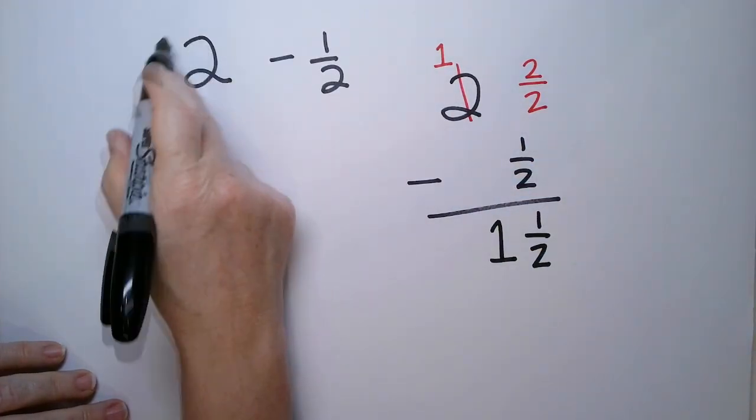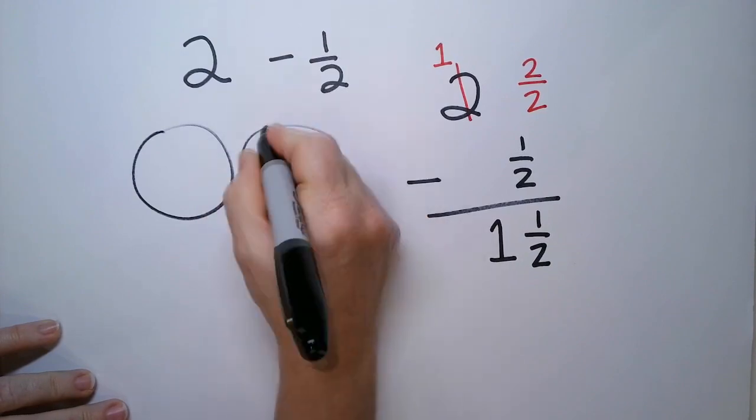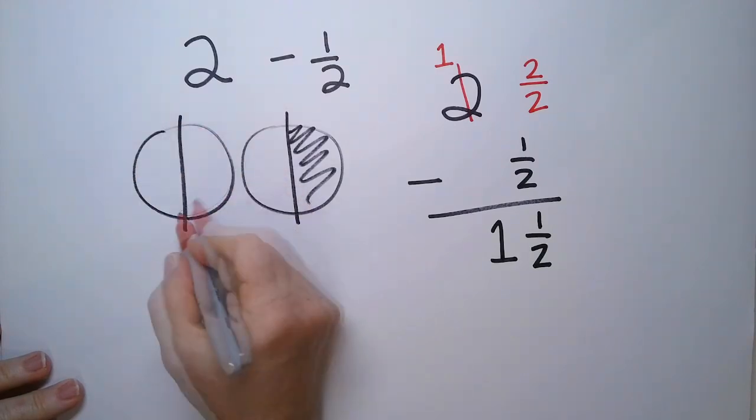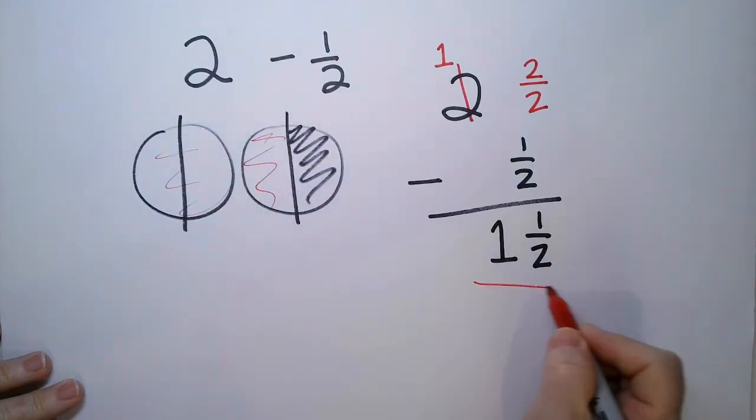And you know that if you have two of something and then somebody borrows a half of one, how much do you have left? You have one whole and a half and that's what we have here.